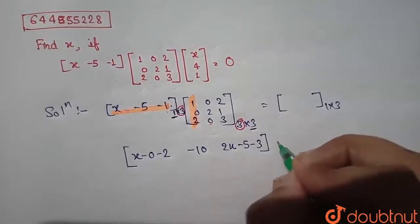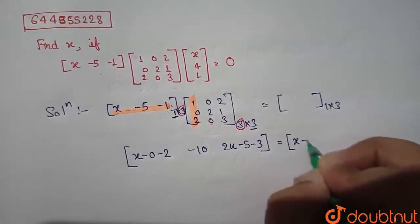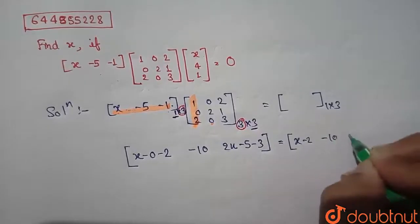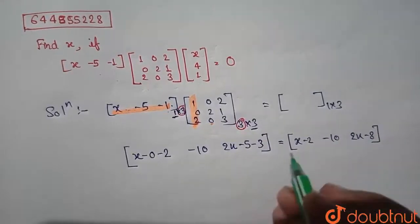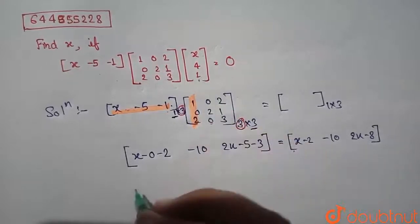Which is equal to [x-2, -10, 2x-8]. Now we have to multiply it by third matrix.